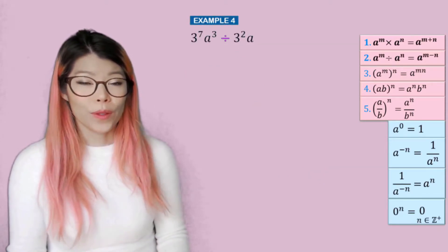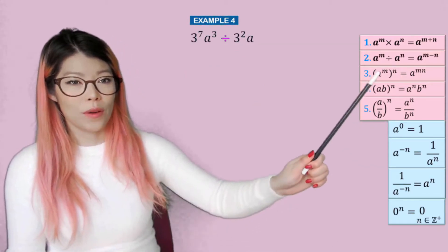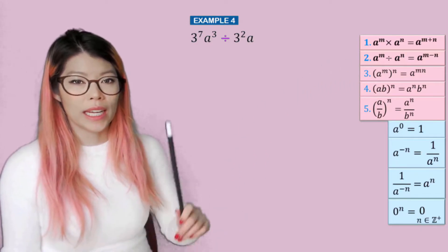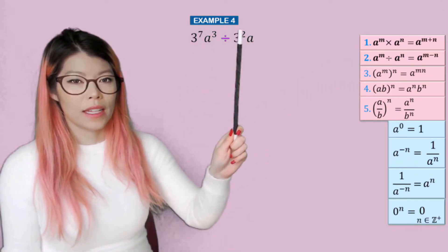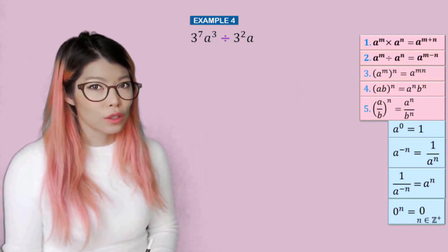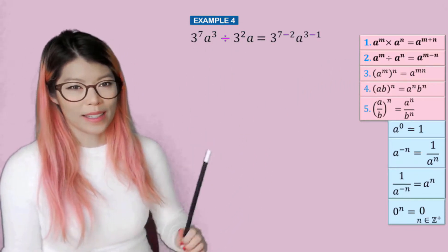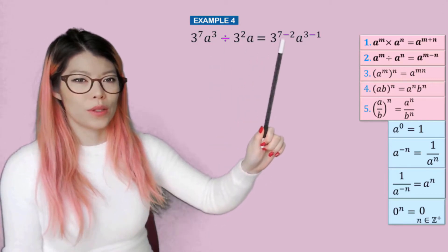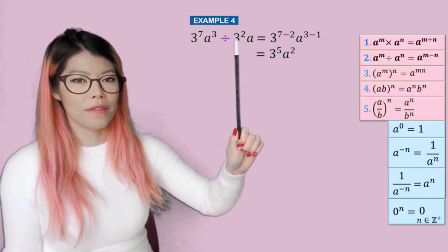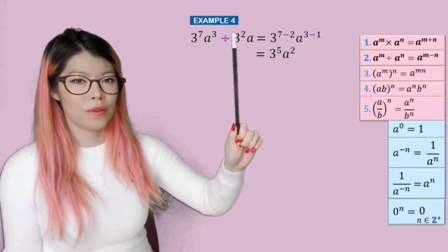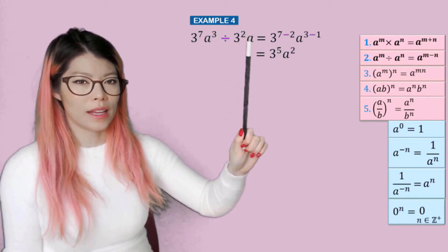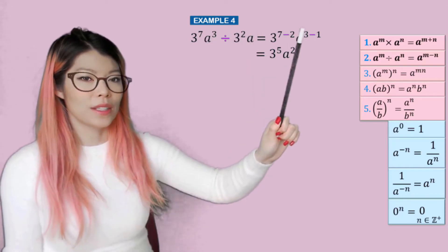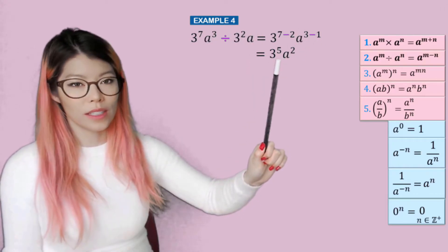Example four: when we divide, we're practicing law number two. Seven and the two — what do you do? You subtract. So now we have three to the power of five, and a to the three and a to the invisible one. So three minus one is two.